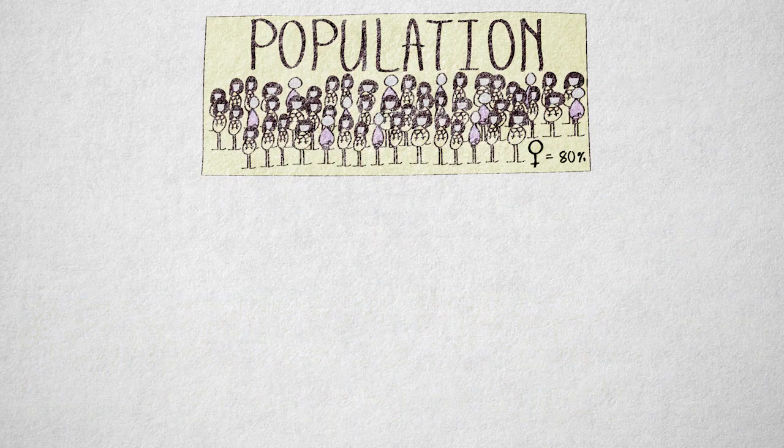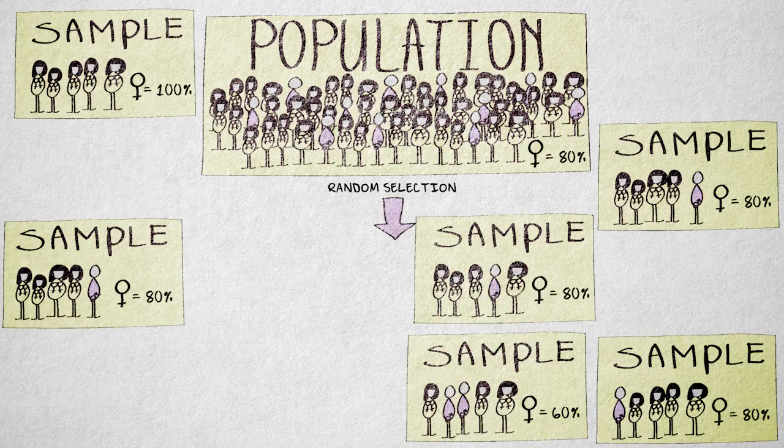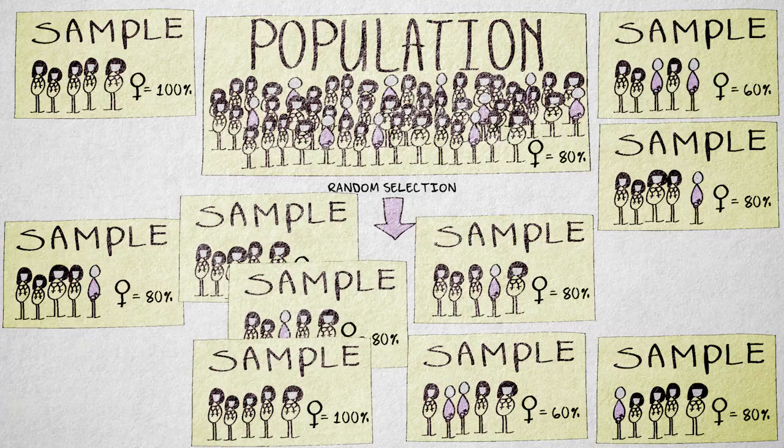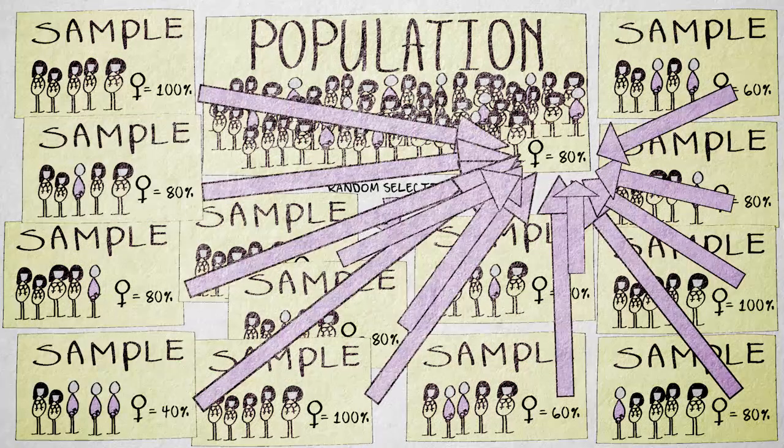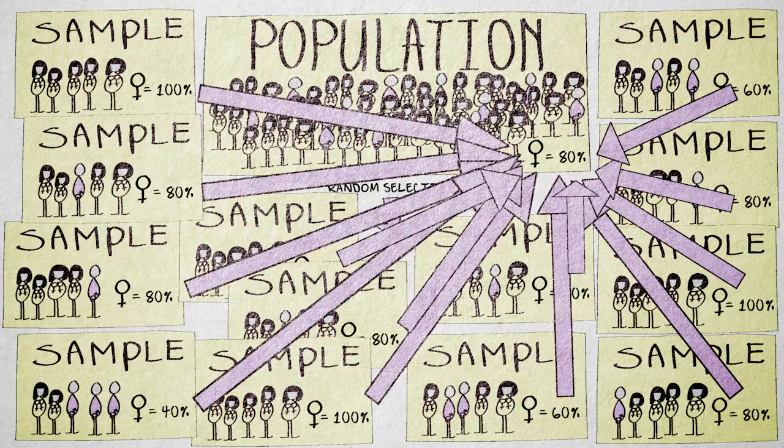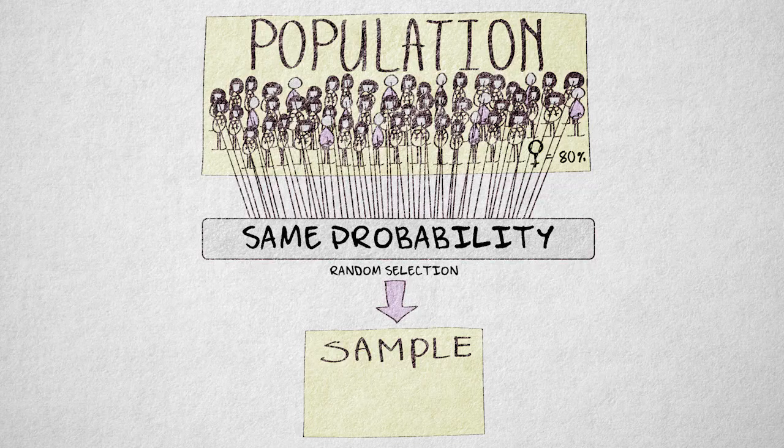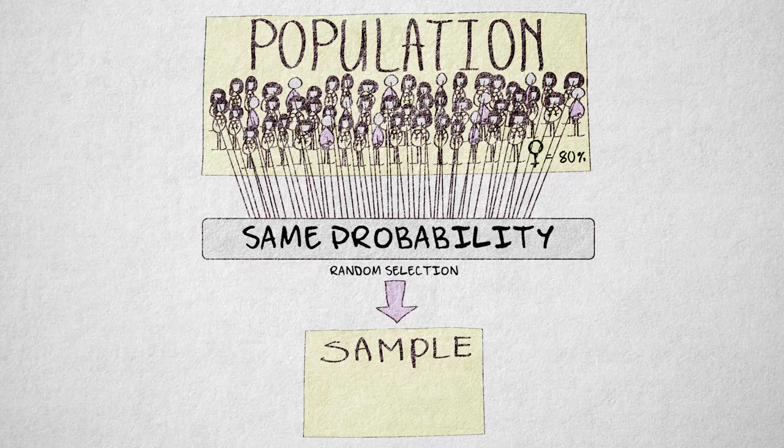Suppose a population consists of 80% women. With repeated random sampling, we can expect the sample to contain 80% women in the long run. Each individual element has the same probability to be selected. And since there are more women, female elements will be selected more often.